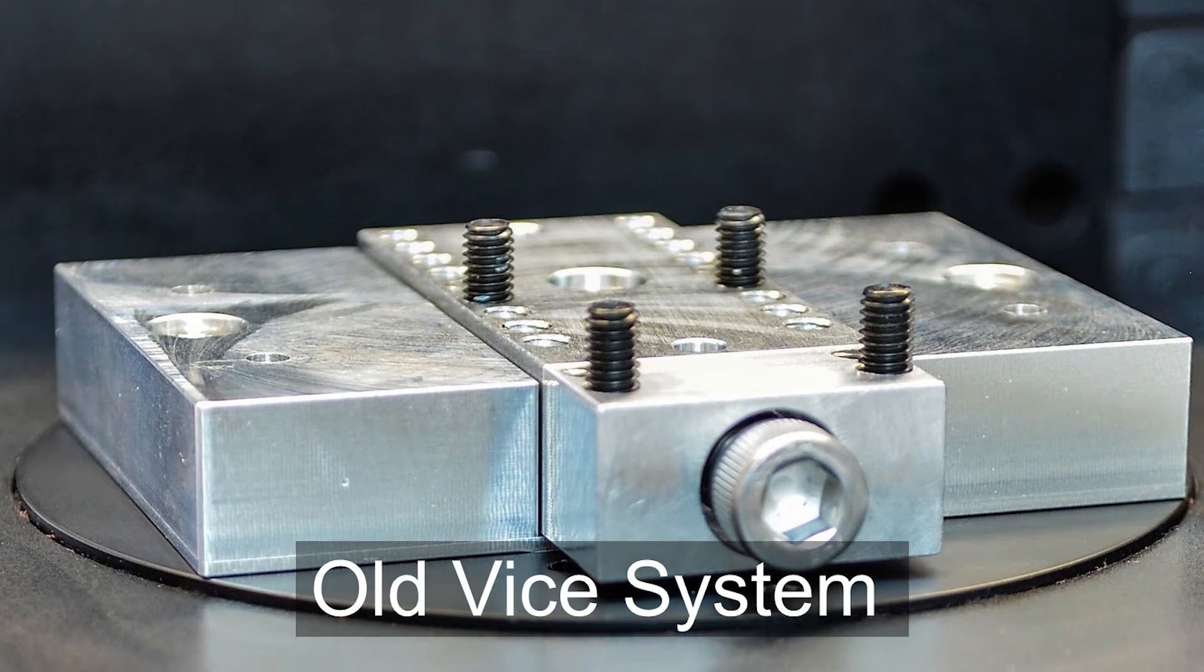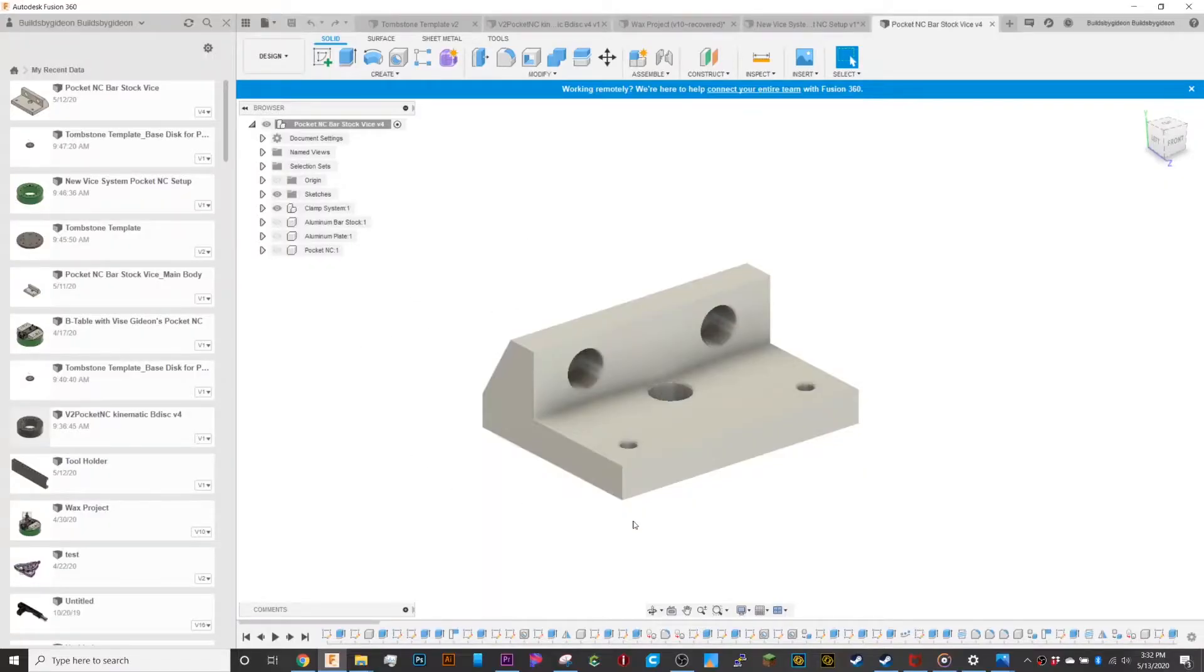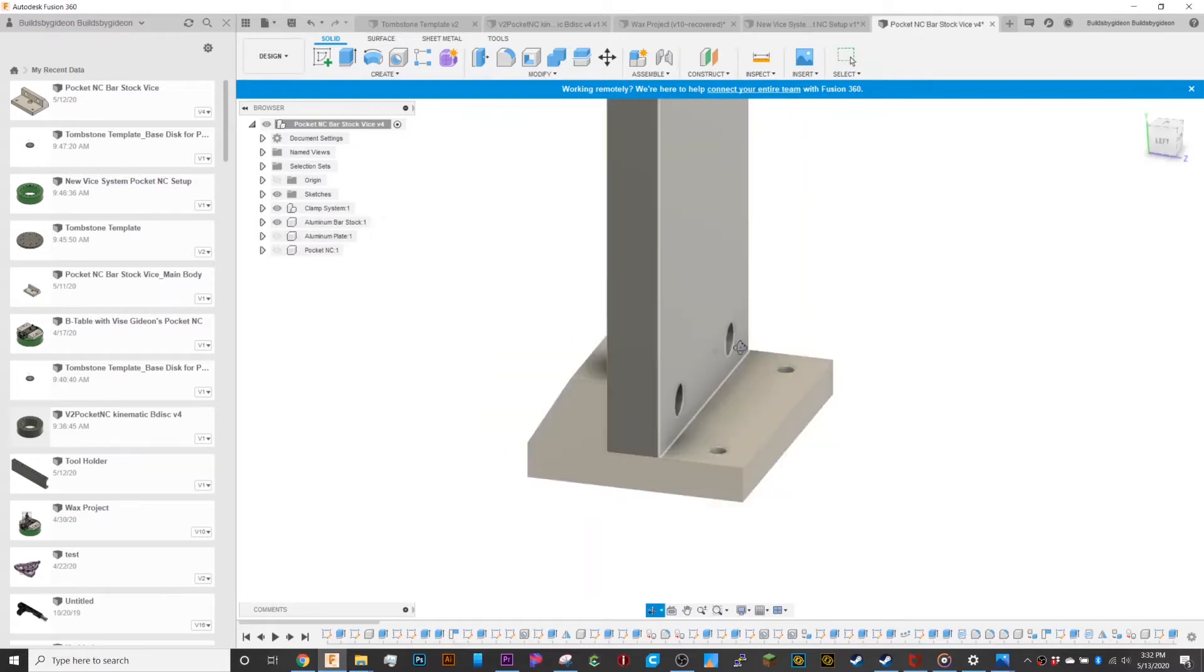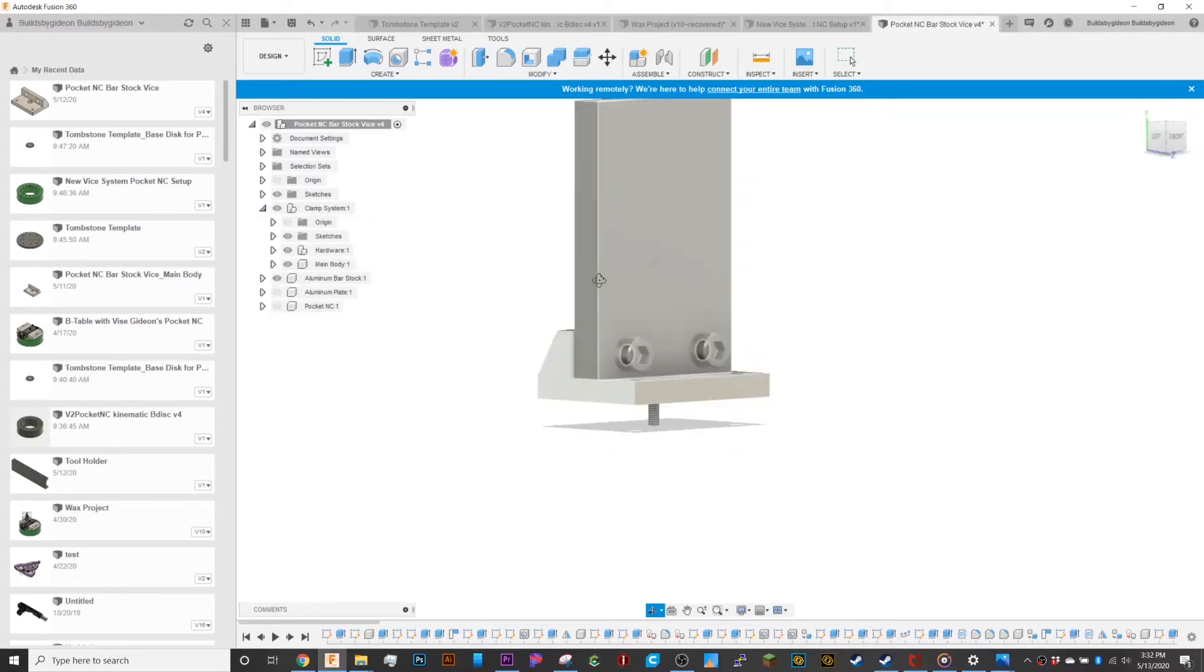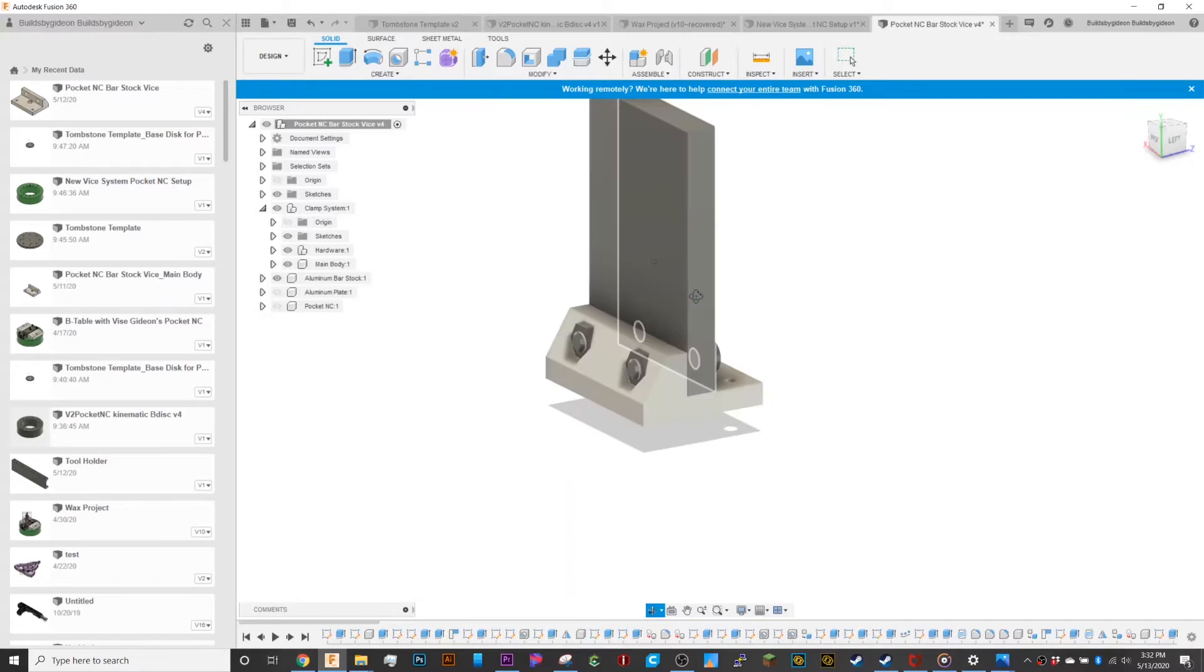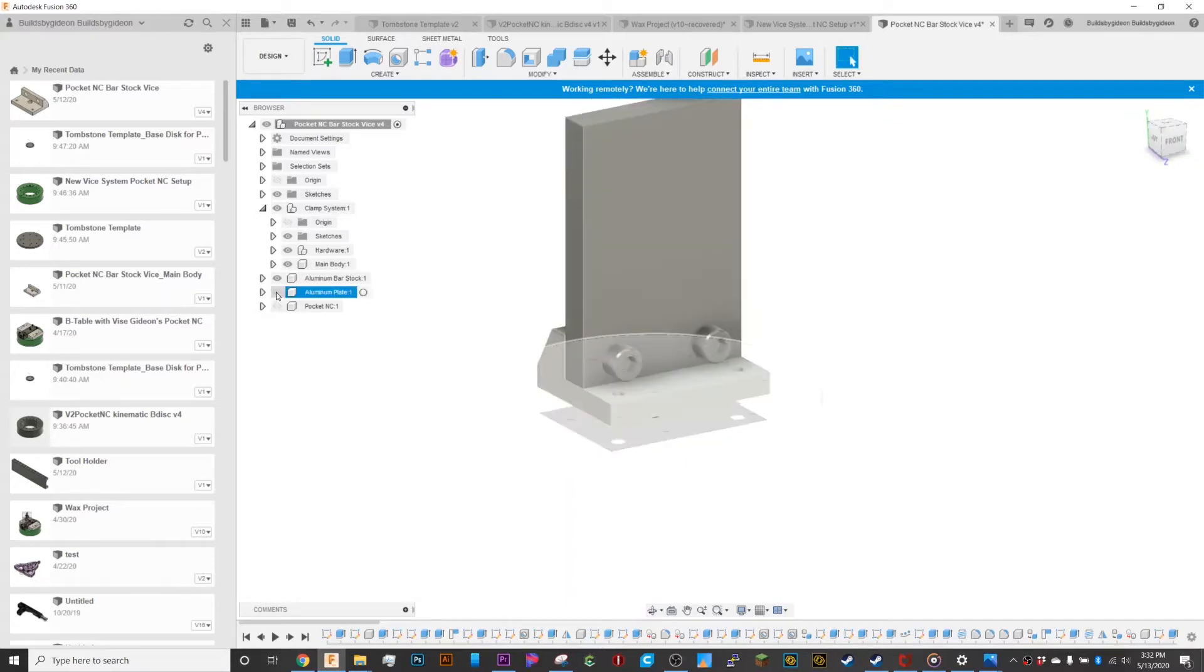The new system here would be a disc that sits on the bed, and then a hard stop backer with holes through it that I would use steel nuts on the opposite side, then screw in through the bar stock to attach it. That should hypothetically work better than my old system, so I'm gonna be milling that out today.